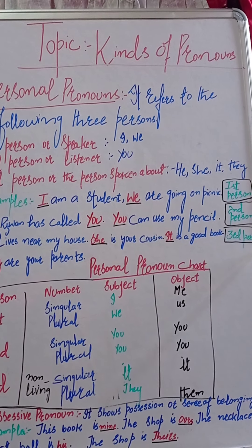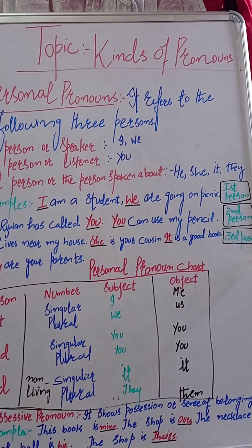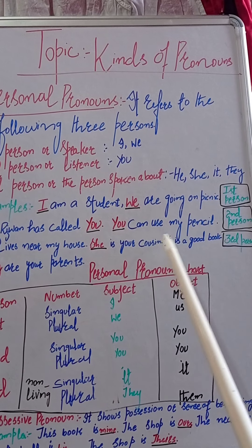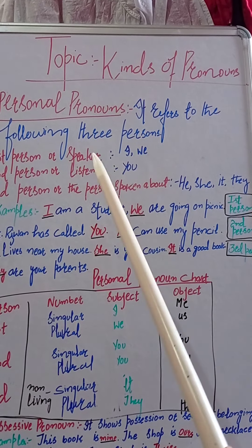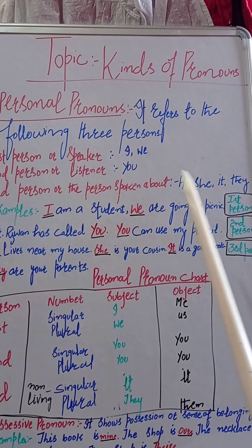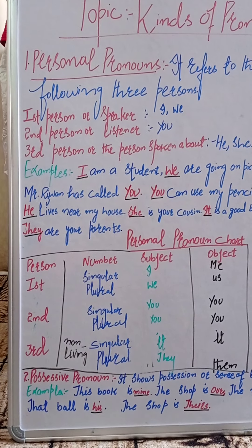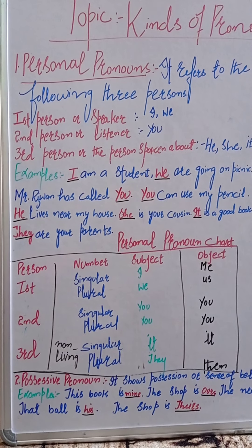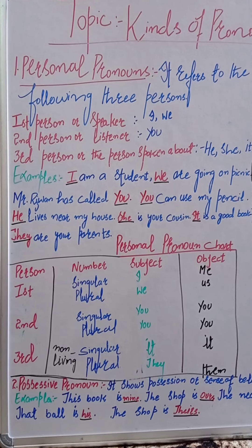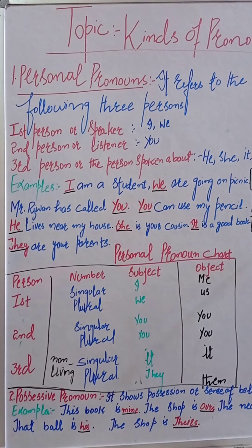So dear children, be attentive — it's a bit difficult to understand, but when you take it seriously and concentrate on it, you will get to know it easily. So what I told you: a personal pronoun refers to three persons. First person — that's the speaker, بولنے والا۔ Second person — listener, سننے والا۔ Third person — کسی کے بارے میں جب ہم بات کر رہے ہوتے ہیں۔ The examples given here — if you read them carefully, you will understand easily.